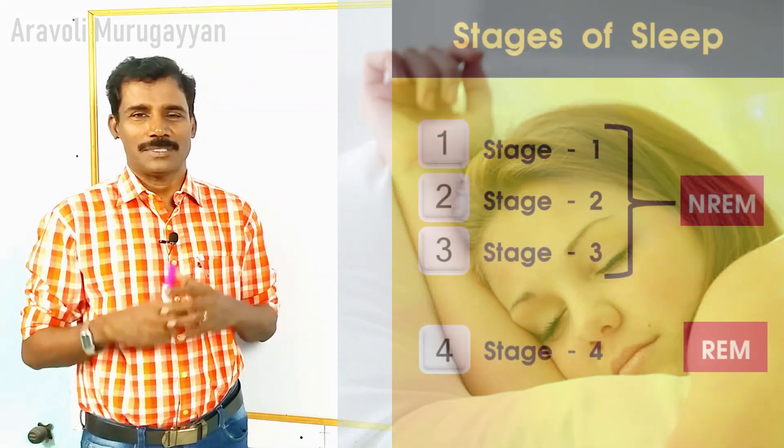Normally we think that a person goes to sleep at 10 o'clock and gets up at 6 o'clock, sleeping straight through. But it is not so. During sleep, a person actually undergoes various stages of sleep.